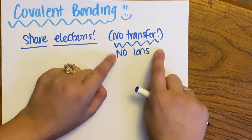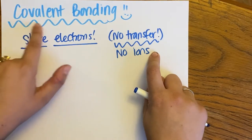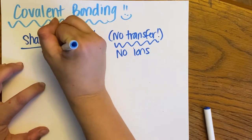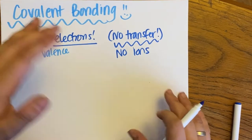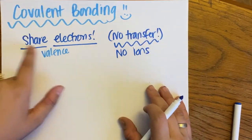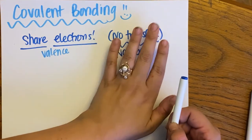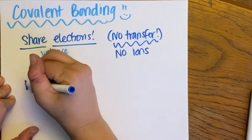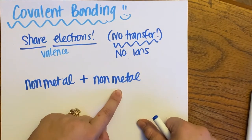There's no transfer of electrons, which means we're not having cations and anions. Instead, we are completely sharing valence electrons. We don't care about the inside shells — we care about the outermost shell, our valence shell. So since we're sharing, not transferring electrons, not making cations or anions, this is going to be a non-metal bonding to another non-metal.